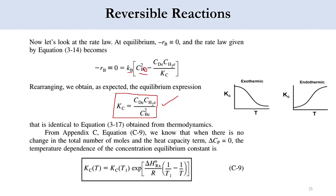For exothermic reactions, increasing temperature decreases the equilibrium constant K_C; for endothermic reactions, K_C increases with temperature. The rate expression from Fogler (Equation C9 in Appendix C) is: K_C(T) = K_C(T₁) · exp[(ΔH_Rx / R) · (1/T₁ - 1/T)], where ΔH_Rx is the heat of reaction and R is the ideal gas constant. The derivation of this will be covered in the next lecture.